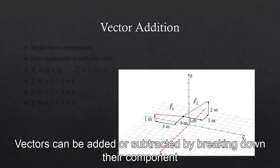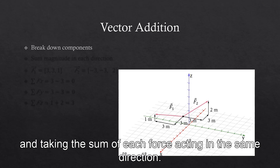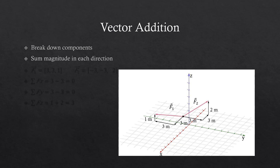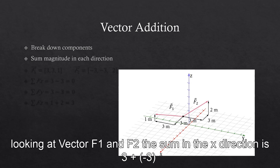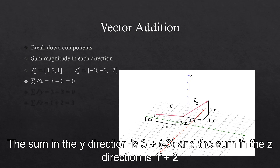Vectors can be added or subtracted by breaking down their components and taking the sum of each force acting in the same direction. Looking at vectors F1 and F2, the sum in the x-direction is 3 plus negative 3, the sum in the y-direction is 3 plus negative 3, and the sum in the z-direction is 1 plus 2.